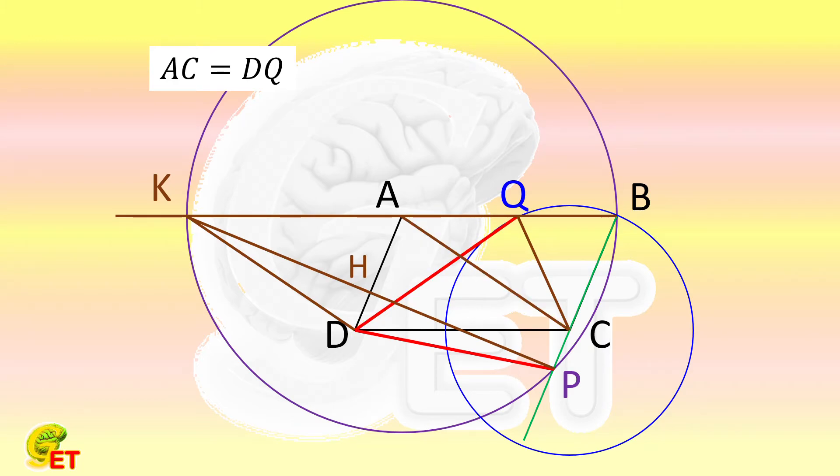We take a look at parallelogram ABCD again and get that AB is parallel as well as equal to DC. That means AK is parallel as well as equal to DC. So ACDK is also a parallelogram. We therefore obtain that AC equals DK.